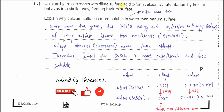Now for the solubility comparison: calcium hydroxide reacts with dilute sulfuric acid to form calcium sulfate; barium hydroxide behaves similarly to form barium sulfate. The question asks why calcium sulfate is more soluble in water than barium sulfate. To explain this, we use the three enthalpies: enthalpy of solution, hydration enthalpy, and lattice energy.